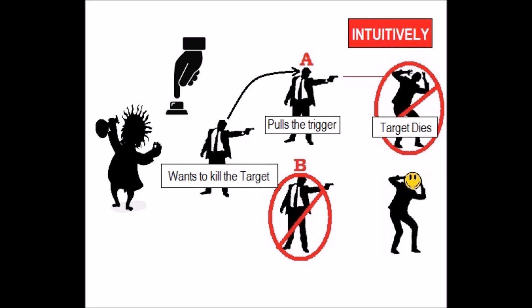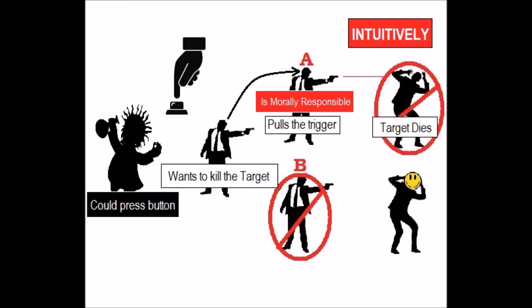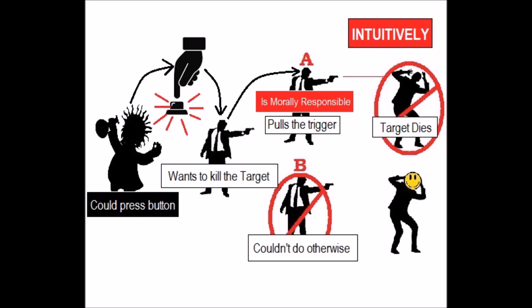Intuitively, it seems like when the target dies, the gunman is morally responsible for killing the target, because the gunman — and no one else — is responsible for pulling the trigger. However, recall that the evil neuroscientist is waiting to force him to pull the trigger, just in case he changes his mind. This means that it was impossible for the gunman to do otherwise than he did do.